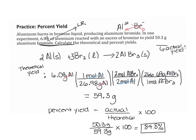Your percent yield needs to be less than 100 — you cannot create matter. If it is over 100 in the lab, you've probably done something wrong. It might be an easy fix: your product may need to dry more, it may be wet with water molecules you're measuring, or you forgot to subtract the weight of the filter paper. Always ask yourself: does this result make sense? For percent yield, it should be less than 100.